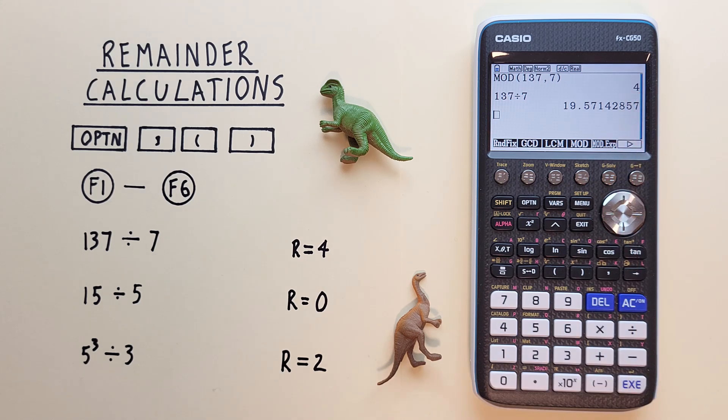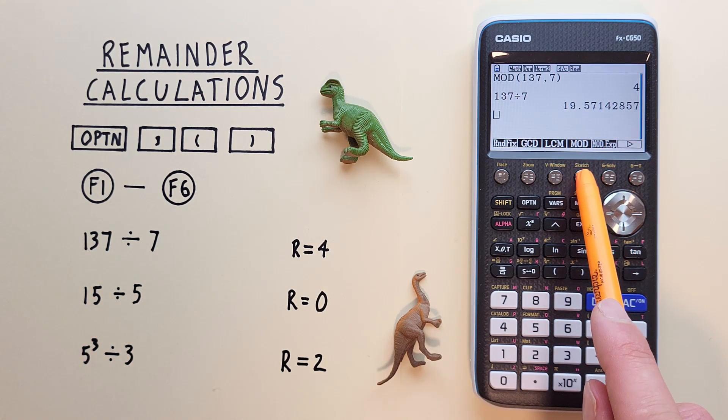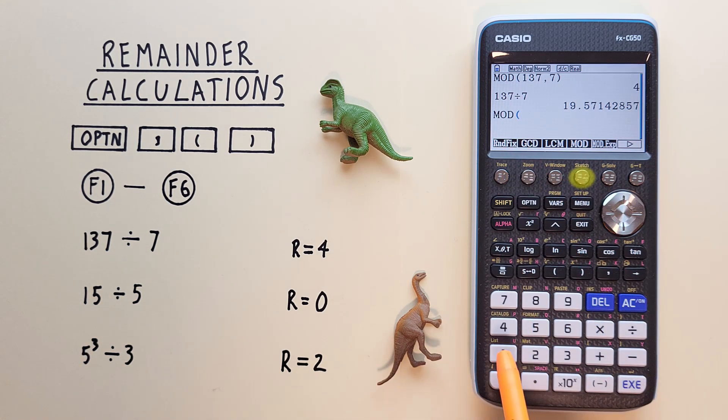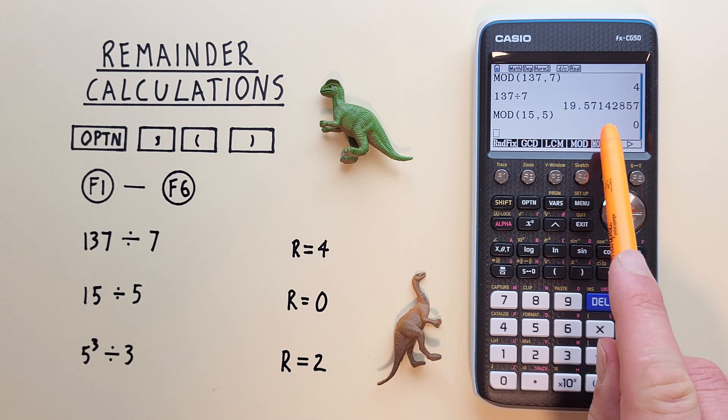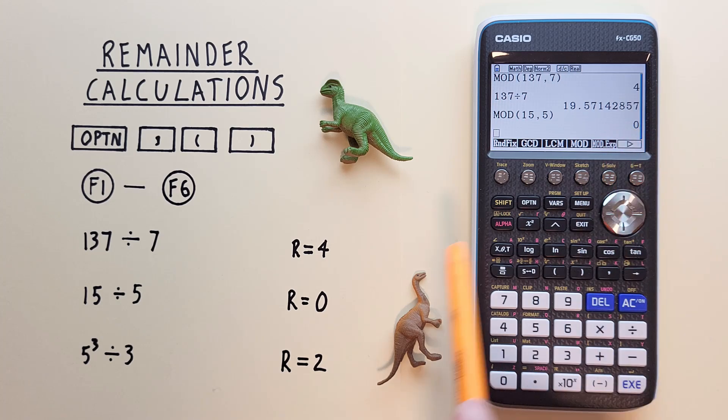Let's try another one. Let's see how many times 5 goes into 15. Again, we start with hitting mod or F4, and then the 15, 5, close our bracket, and hit EXE. And we see we get a remainder or modulus of 0, which is correct, because we know 5 goes into 15 3 times with no remainder.